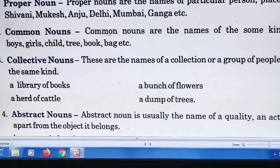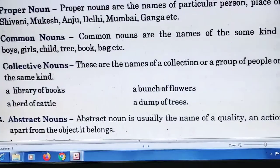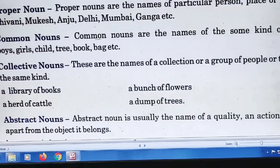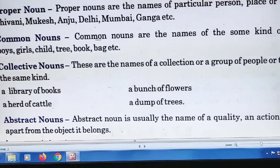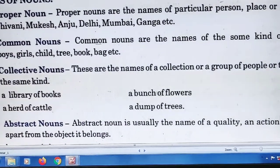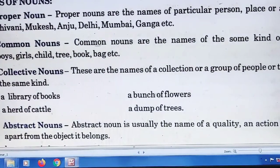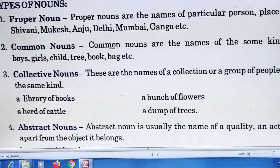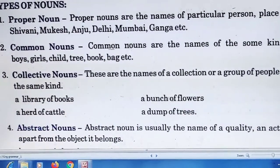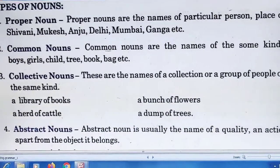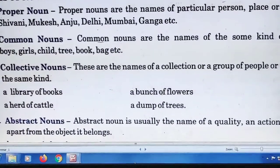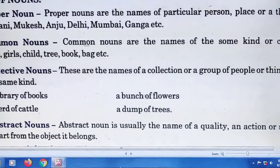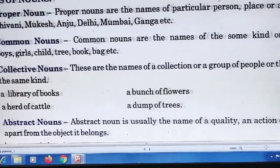Common nouns are the names of some kind or class — boys, girls, child, tree, book, etc. A common noun refers to a whole class. For example, 'boys' does not refer to one specific boy — it includes all boys in the world. Similarly, 'girls' refers to all girls. That is common noun.